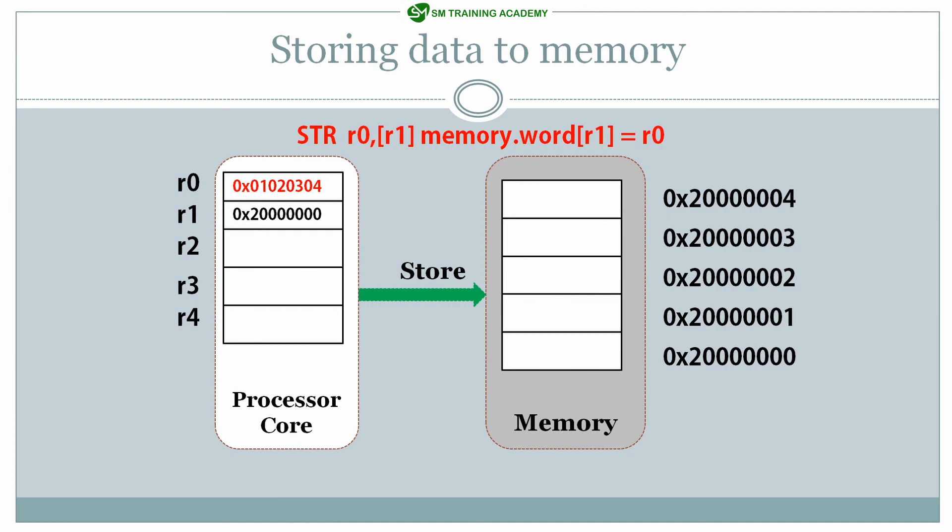At the memory address 0x20000000 specified in R1, these four bytes of data 0x01020304 will be written. This is how the storing operation is done in the processor using an assembly instruction. I hope you understood how data is loaded from memory using load instructions to registers, and also how to store data back from registers to the memory unit in the ARM Cortex-M processor using load store architecture. See you in the next video. Thanks for watching.